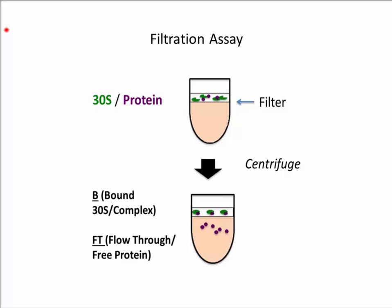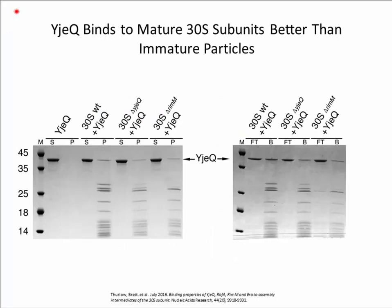To test the binding interactions, we initially used a combination of filtration and pelleting assays. For these assays, we incubated purified assembly factors and ribosomes and then centrifuged the solution through a 100 kilodalton cutoff filter. Because all of the proteins are much smaller than 100 kilodaltons, they will pass through the filter. However, any proteins that bind to the ribosome will be retained. Similarly, for the pelleting assays, purified factors are incubated together and then ultracentrifuged through a sucrose gradient — factors that bind will pellet with the ribosome while non-binders remain in the supernatant. All samples are run through SDS-PAGE analysis.